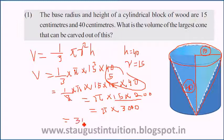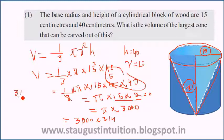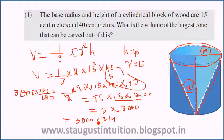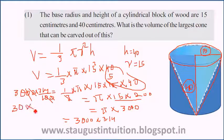That is 3,000 into π. Using π as 22/7, we get 3,000 into 22 divided by 7. The zeros cancel, giving the answer as 3,000 π, approximately 9,420 cubic centimeters.